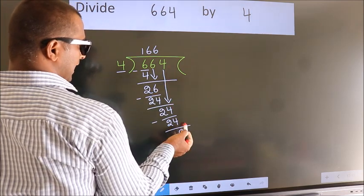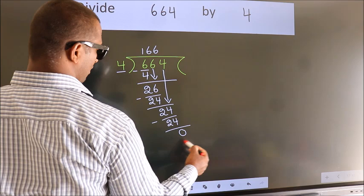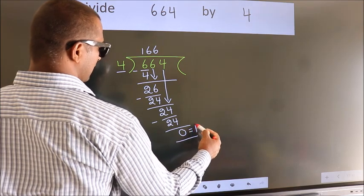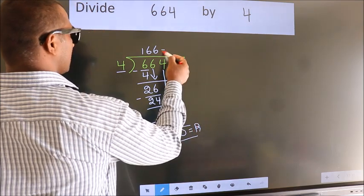No more numbers to bring it down. So, we stop here. This is our remainder. This is our quotient.